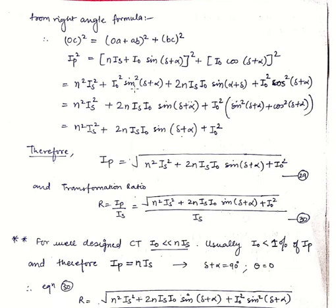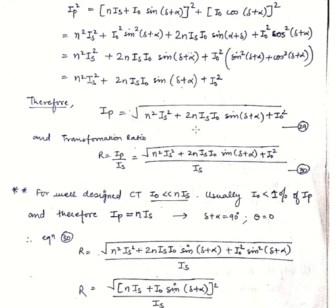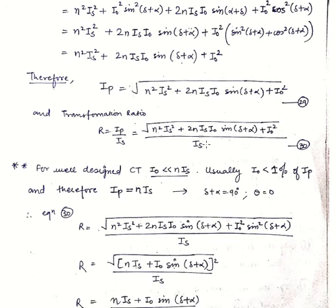We see that sin² and cos² terms combine to equal 1. So taking I0² common, sin²(delta + alpha) plus cos²(delta + alpha) equals 1. Finally we get: I_p² equals N²*I_s² plus 2*N*I_s*I0*sin(delta + alpha) plus I0². Therefore R equals I_p/I_s equals the square root of (N²*I_s² plus 2*N*I_s*I0*sin(delta + alpha) plus I0²) divided by I_s.